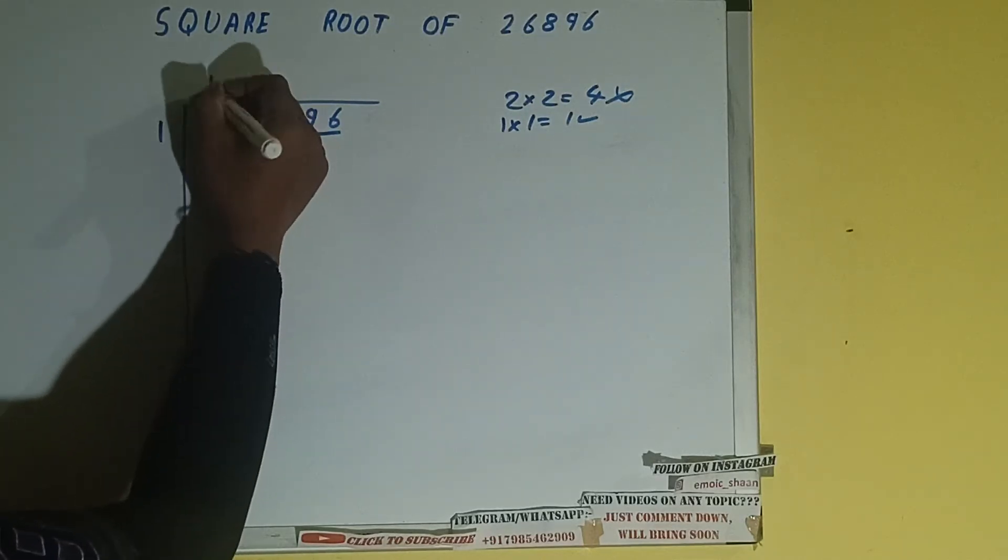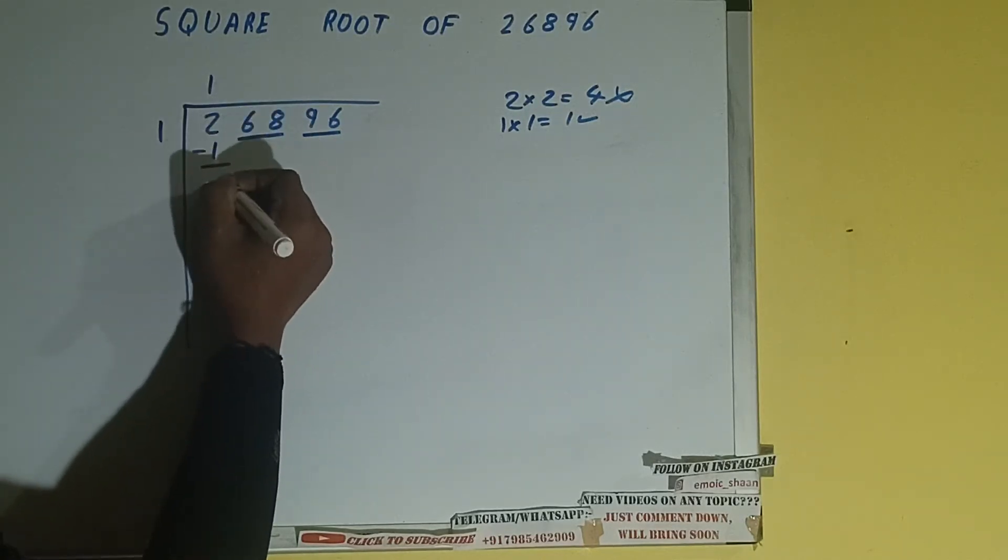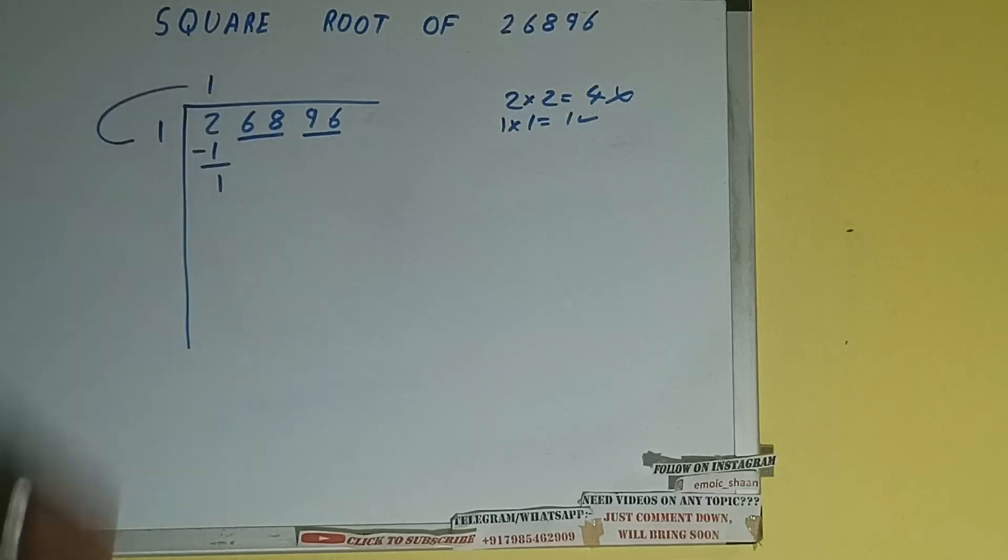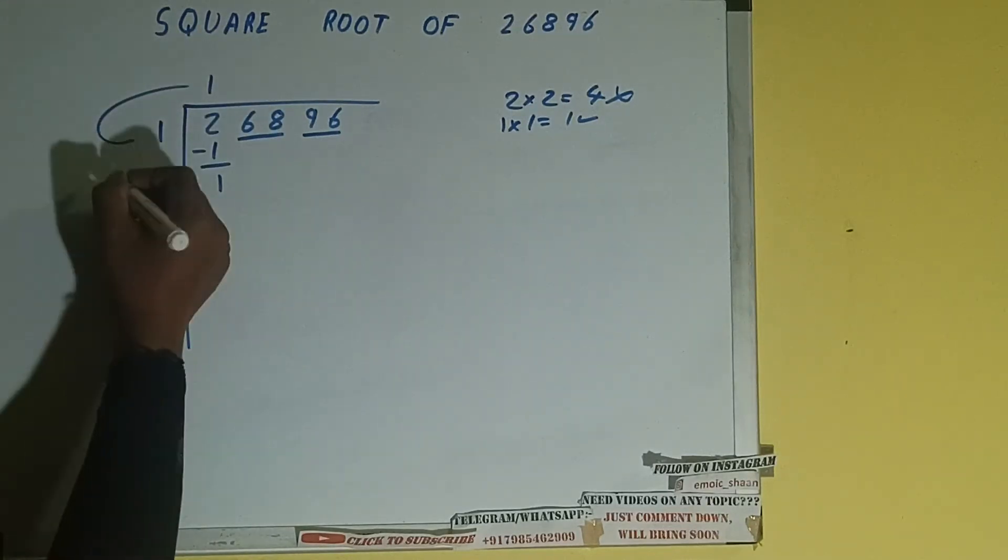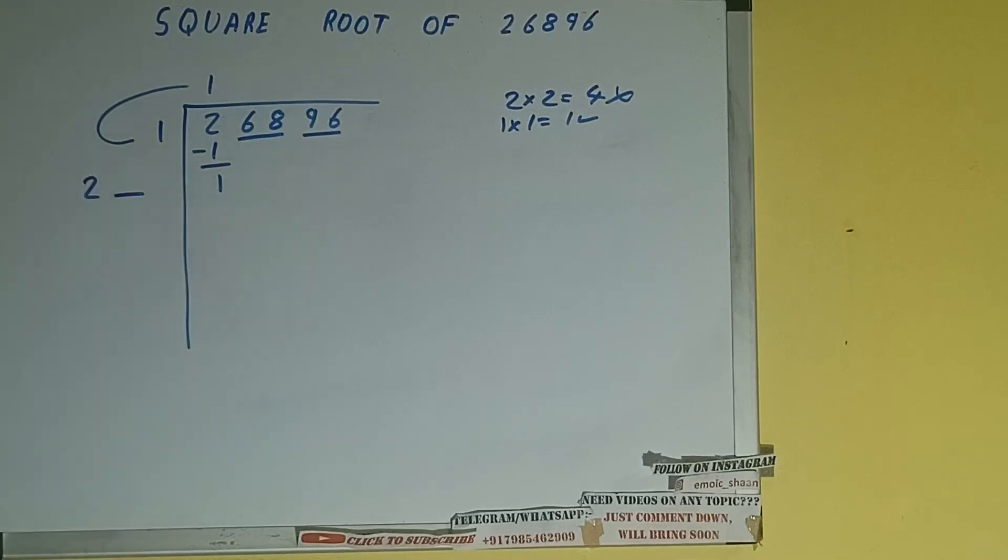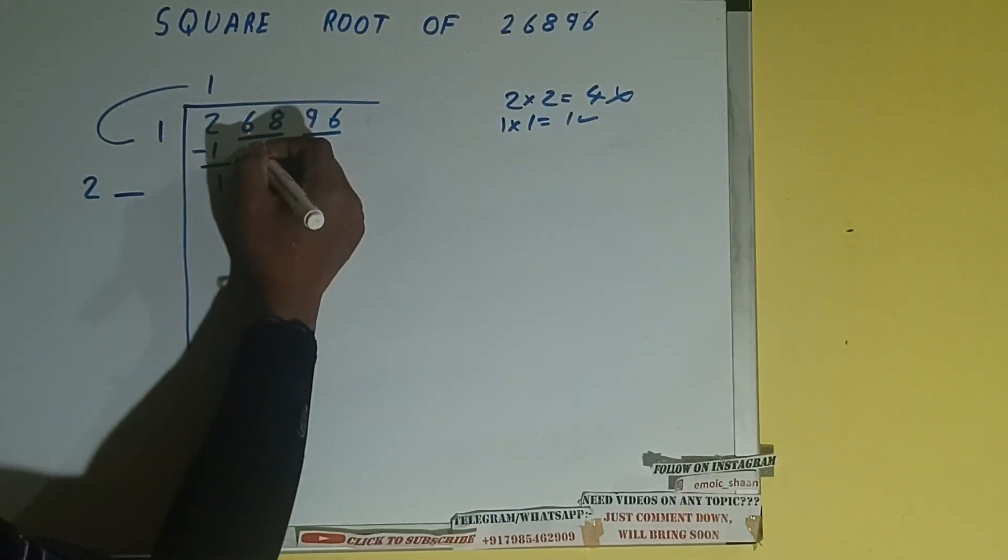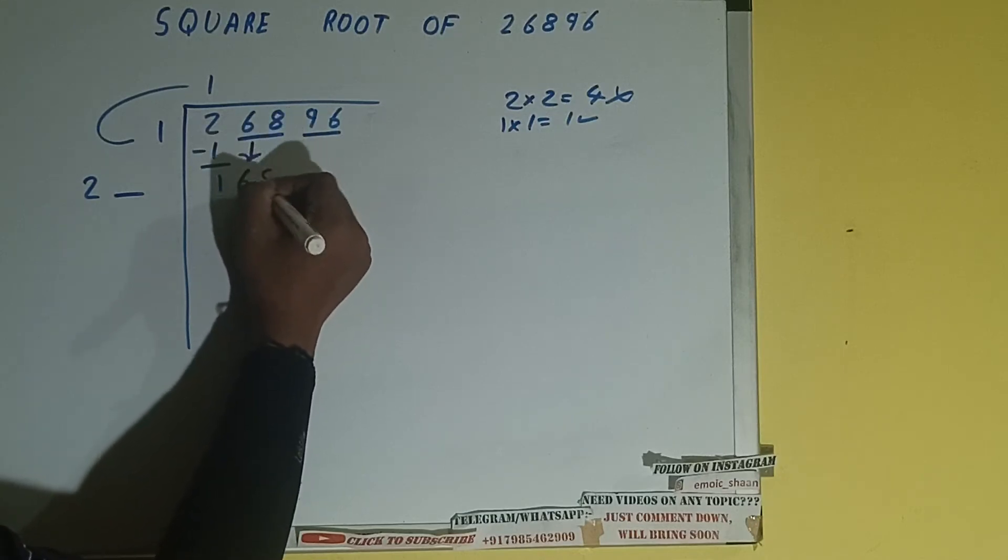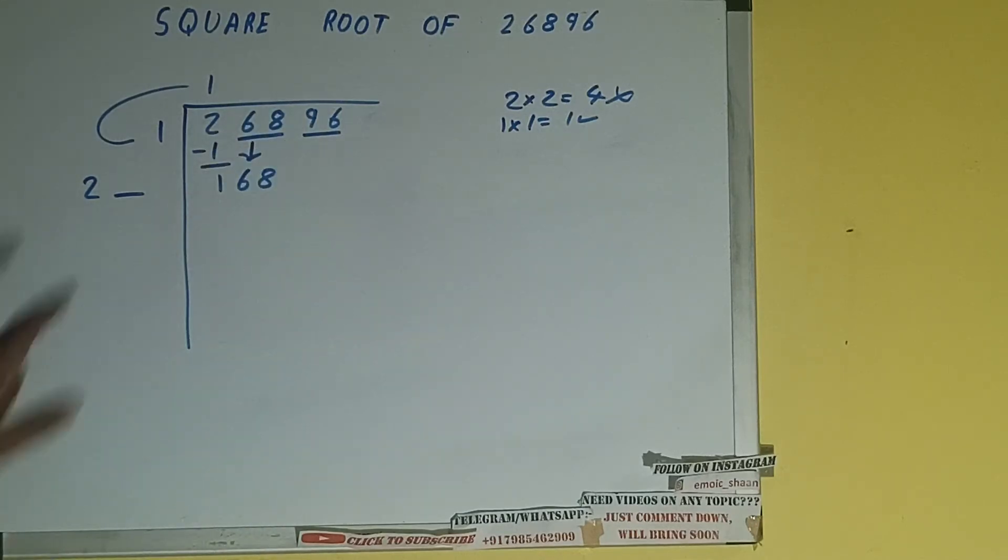So 1 here and 1 here. 1 subtract 1, 1 will be left. We did 1 into 1, so add both: 1 plus 1 will be 2. Write it here and keep one digit extra. Now make this number big by bringing the next pair down, and it will be 168.